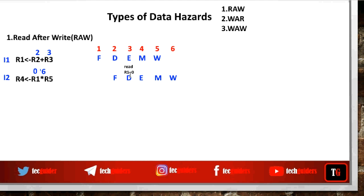The required value — the sum of the contents of r2 and r3 — will be written to register r1 only at the end of the fifth clock cycle. So here we are trying to read data from register r1 before the write. We are expected to read the data after the write, but we are reading before the write, hence these are called read after write data hazards.